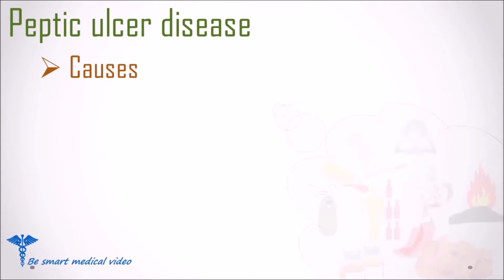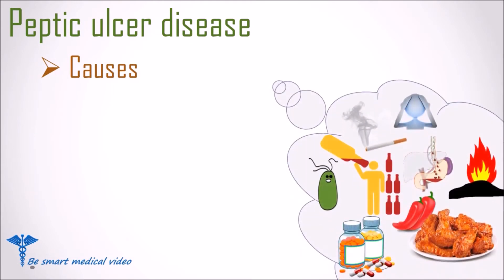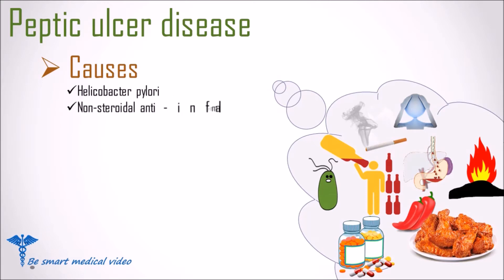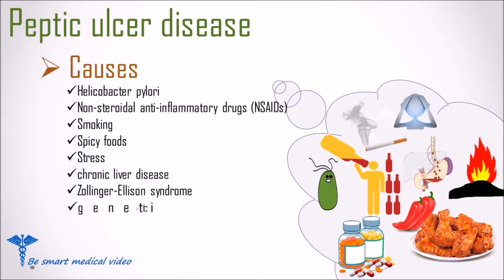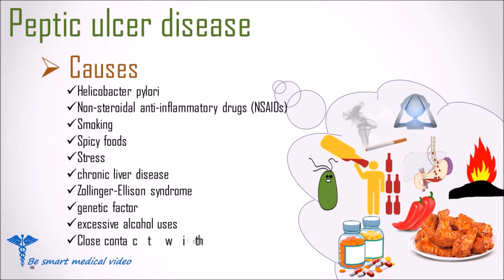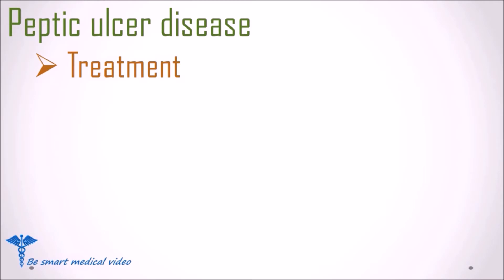The most common causes of peptic ulcer disease include the bacteria Helicobacter pylori and non-steroidal anti-inflammatory drugs, or NSAIDs. Other causes include smoking, spicy foods, stress, chronic liver disease, Zollinger-Ellison syndrome, genetic factors, excessive alcohol use, and close contact with infected persons.